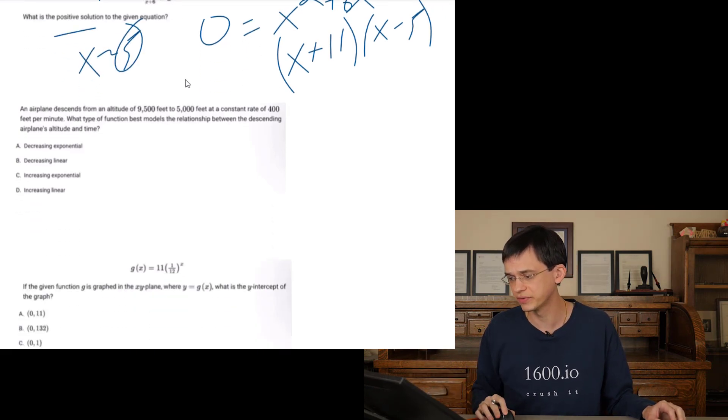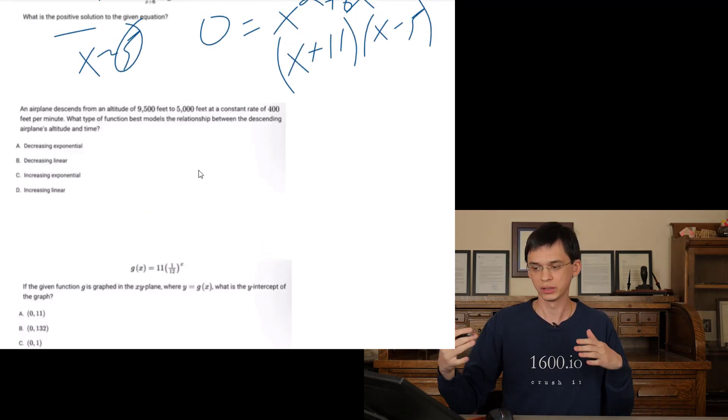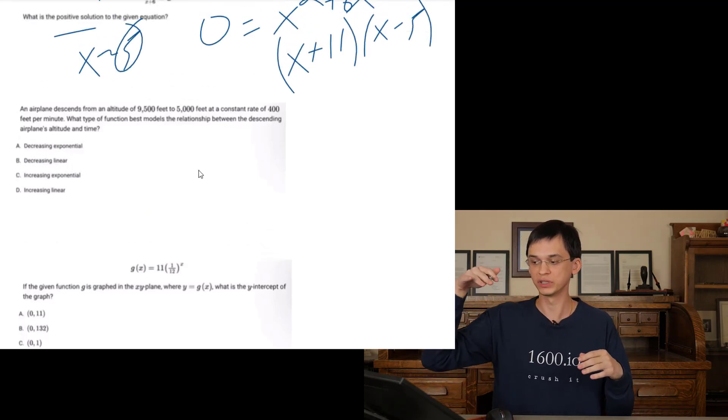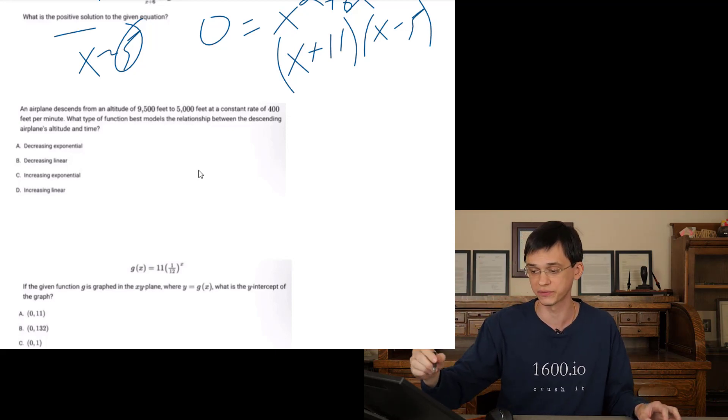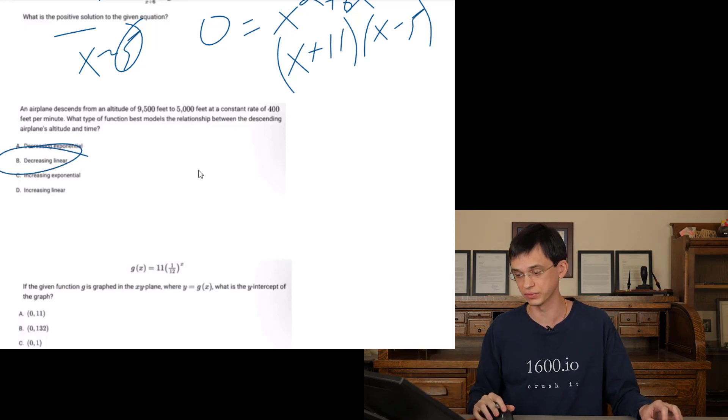An airplane descends from an altitude of 9,500 feet to 5,000 feet, a constant rate of 4,000 feet per minute. Type of function. Is it exponential or linear? It's linear. We're decreasing at a constant rate. That's a hallmark quality of a line. And we're obviously decreasing because we go from 9,500 to 5,000. We're decreasing linearly in this relationship.